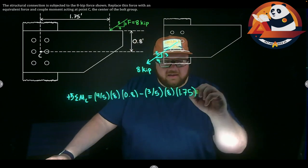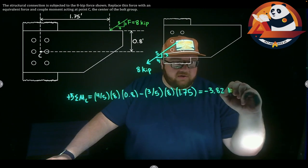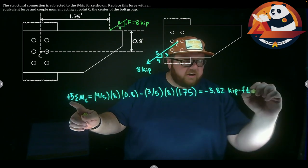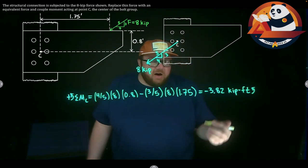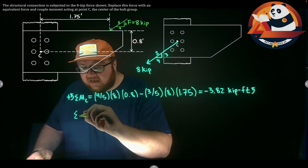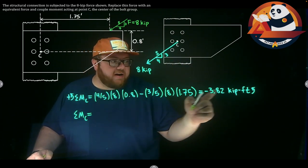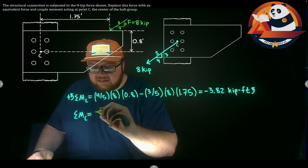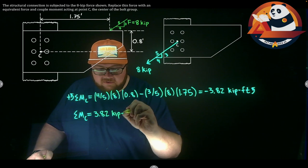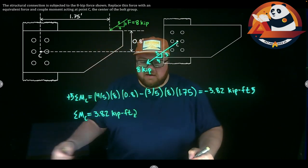This is going to get us that our couple moment here is negative 3.82 kip-feet. That's negative when we're working with counterclockwise. We always want to get that as a positive with the right direction. Really, that total moment and what I'm going to need to introduce as a couple moment into our object is we'll drop our negative and change this rotation to positive 3.82 kip-feet, and we're going clockwise with that.